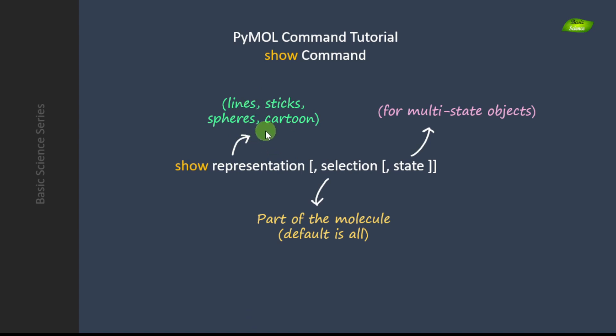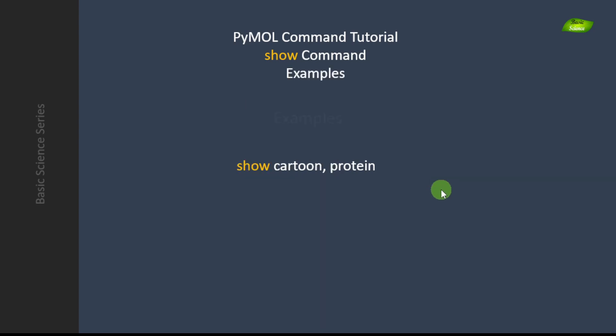The next part of the command is selection — what part of the molecule you want to see in this representation. By default, if you don't provide a selection, it takes the entire molecule. Next is state. Various molecules can have different conformations — for example, if you are doing molecular docking you can get different poses, those are your different states. You can write 1, 2, 3, 4, etc. to specify a particular state. This completes the entire command syntax.